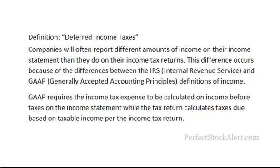The reason for that is as follows. Companies will often report different amounts of income on their income statement than they do on their income tax returns. The difference occurs because of the difference between the IRS Internal Revenue Service and the GAAP, or Generally Accepted Accounting Principles, definitions of income. Basically, they view them differently.